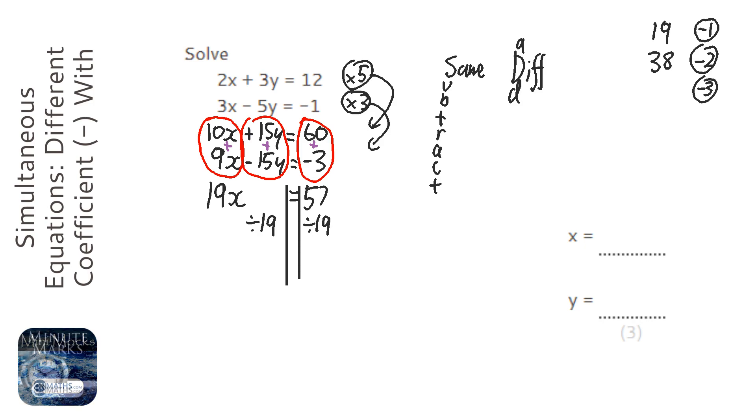I'm going to take away 3. 3 times 20 is 60. Take away 3 is 57. So x equals 3.